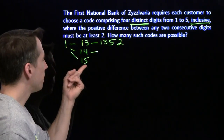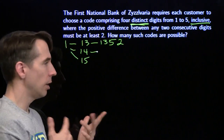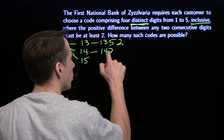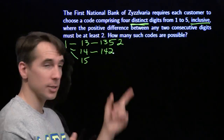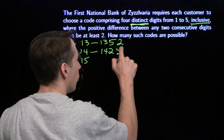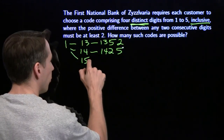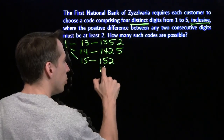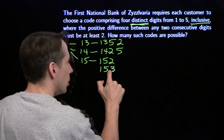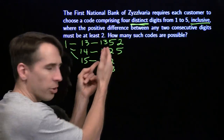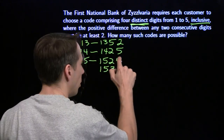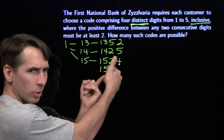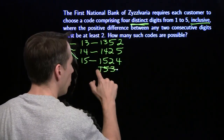Then starting one, four: we have two, three, and five left, but we can't put a three or a five after the four. So we go one, four, two — then we only have three and five remaining, but we can't put a three next to the two. So: 1-4-2-5. That's the only one starting with one, four. Starting one, five: we can put a two or a three next. If we put a two there, we have three or four left but can't put a three next to the two, so we put a four: 1-5-2-4. If we go 1-5-3, only two and four are left and neither can follow three, so that doesn't work. These are all the possibilities starting with one.